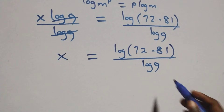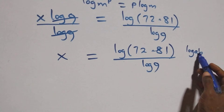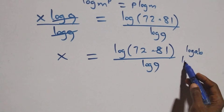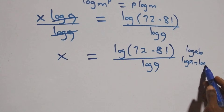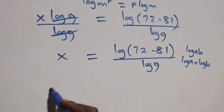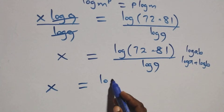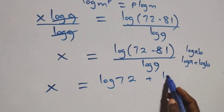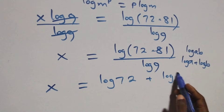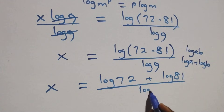Then we apply the product rule of logs, where log(a times b) is the same as log a plus log b. So we have x equals log 72 plus log 81, all over log 9.